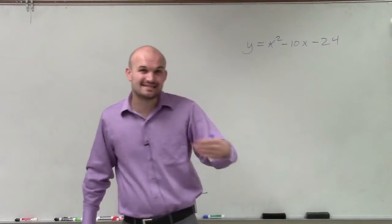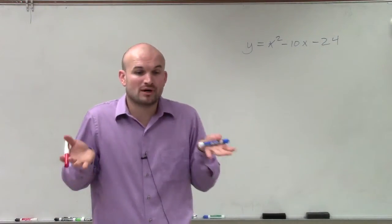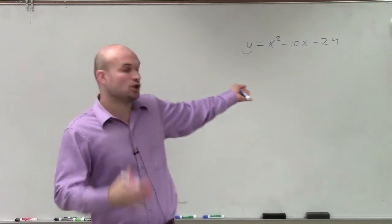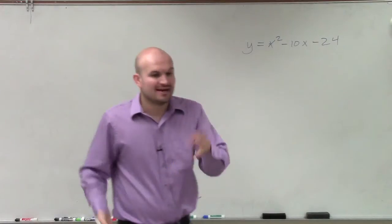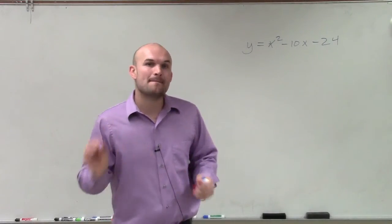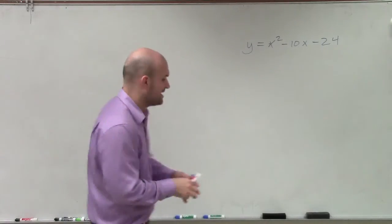And since the middle term is negative, remember, we multiply the two factors to give us negative 24, but then we add them to get our coefficient of our middle term. Now, if we're adding those two factors and they add to give us a negative number, that means the larger of the two factors has to be negative.